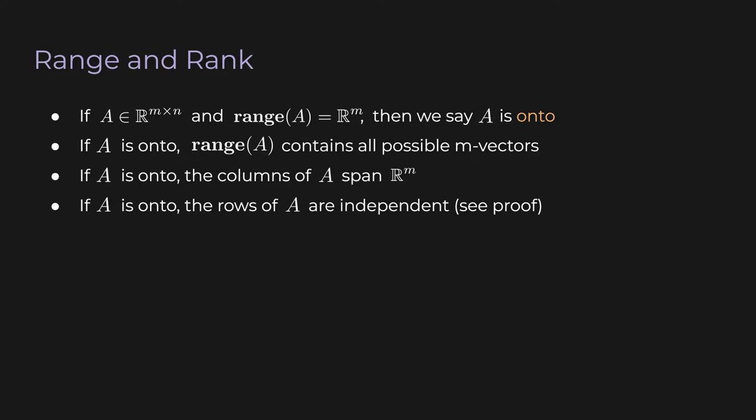So if A is onto, the following statements are true and equivalent. First, the range of A contains all possible m-vectors. Second, the columns of A span R^m. And finally, the rows of A are independent. This last one isn't immediately obvious — we'll go over a quick simple proof in a minute.